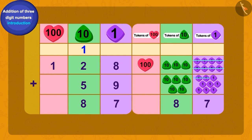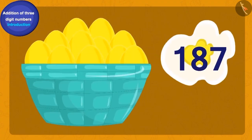Now what shall we do in the end? Yes, we would write one as the total number of tokens of hundred. Oh wow! Babban now had a total of 187 gold eggs.